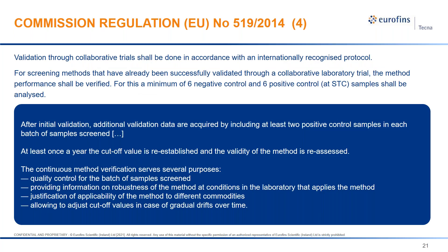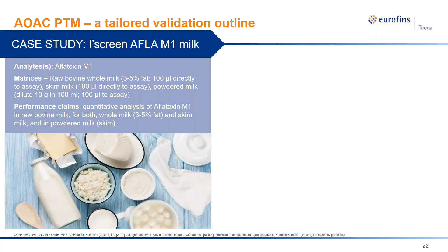If the method selected has already been validated through a collaborative trial with interlaboratory results, the user can downsize their effort and reduce the experiments just to confirm fitness for purpose by means of six materials only. It is never permitted to reduce below this quantity or use one single sample. For quality monitoring, it is recommended to keep two positive control samples in routine and to recalculate the cutoff once per year.